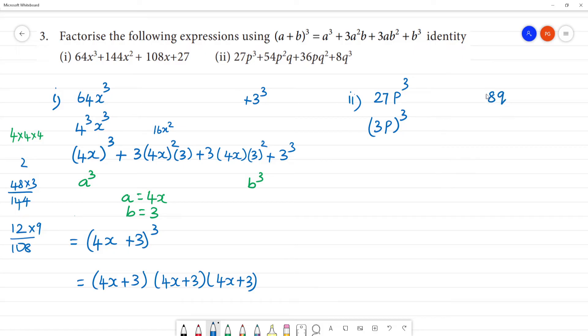And we have 8q³, which is (2q)³. 3³ is 27, 2³ is 8. So a is 3p and b is 2q.